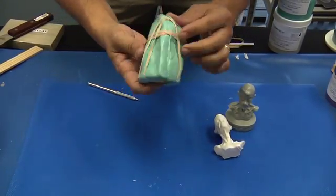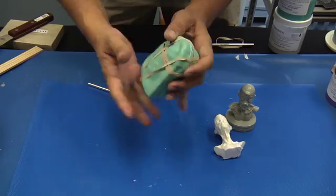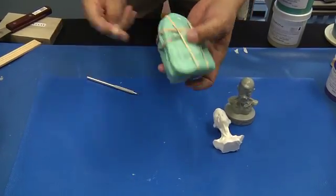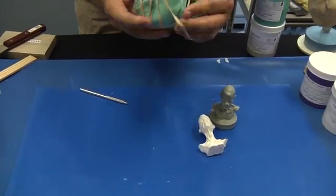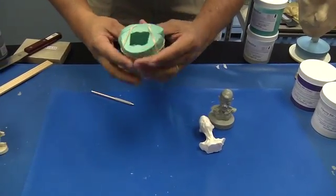Now I'm preparing the mold for casting. I've used rubber bands here to basically hold the mold together and to keep it from leaking the liquid polyurethane resin that we're going to be using to make our parts.